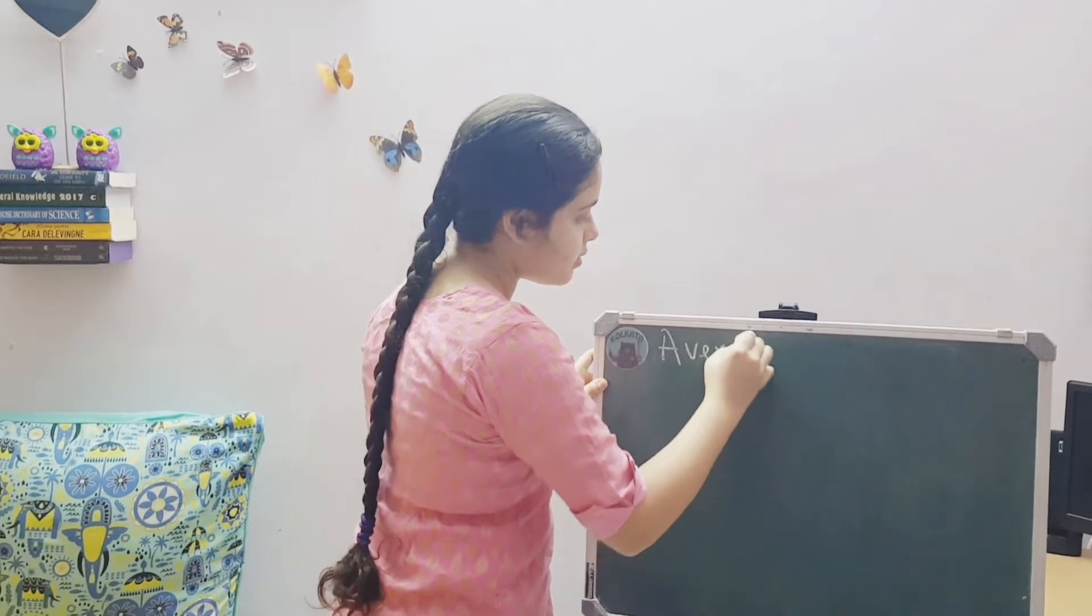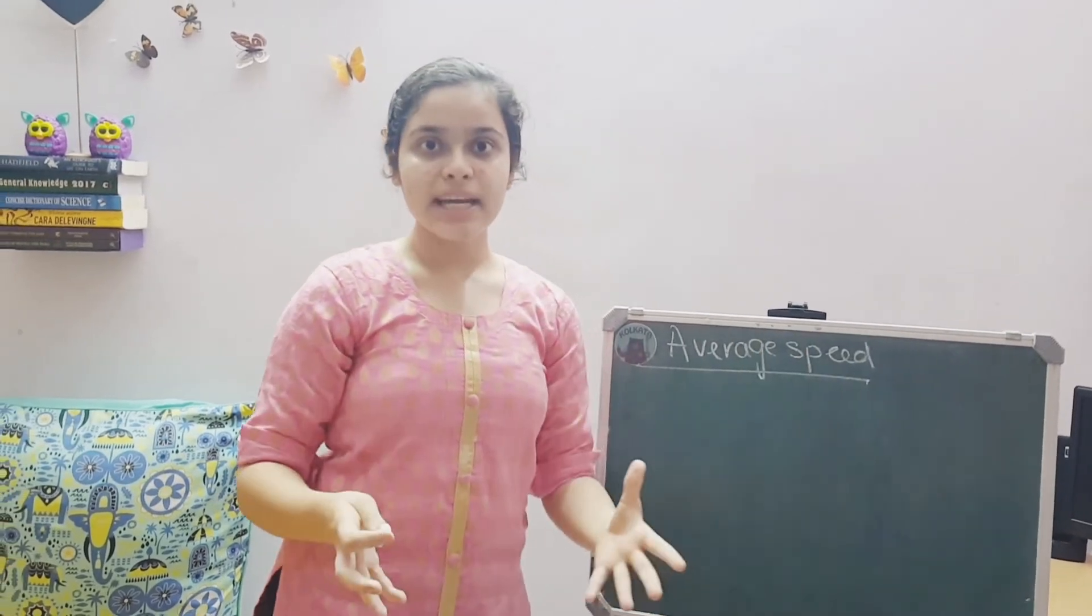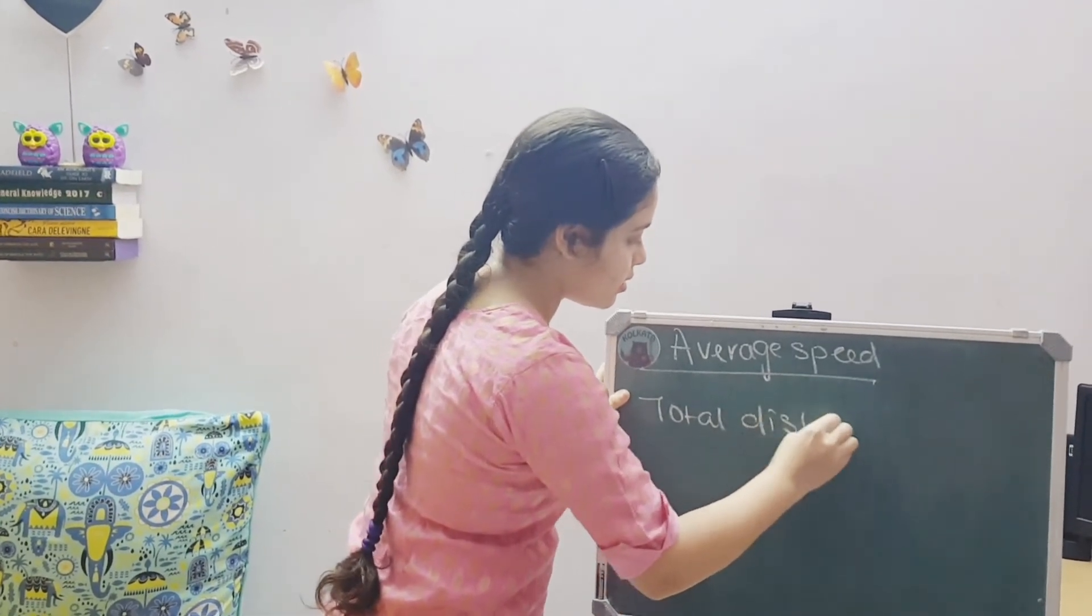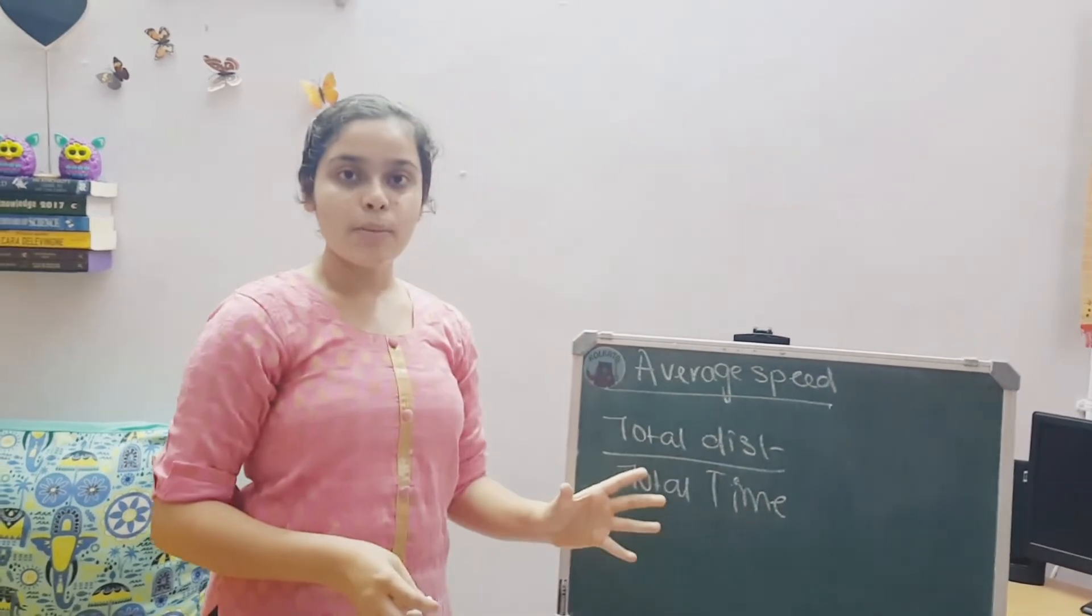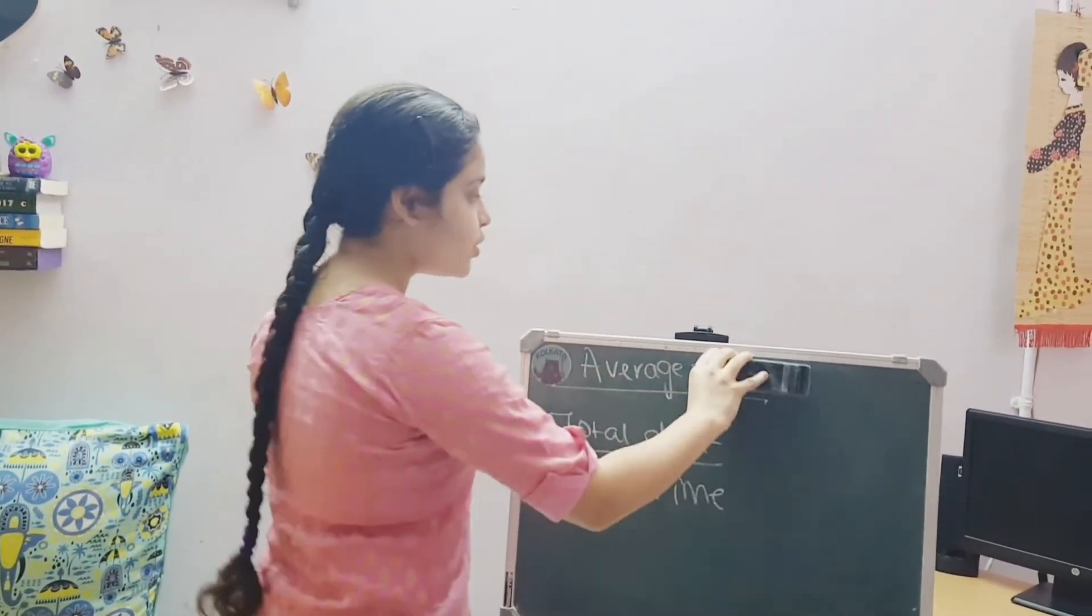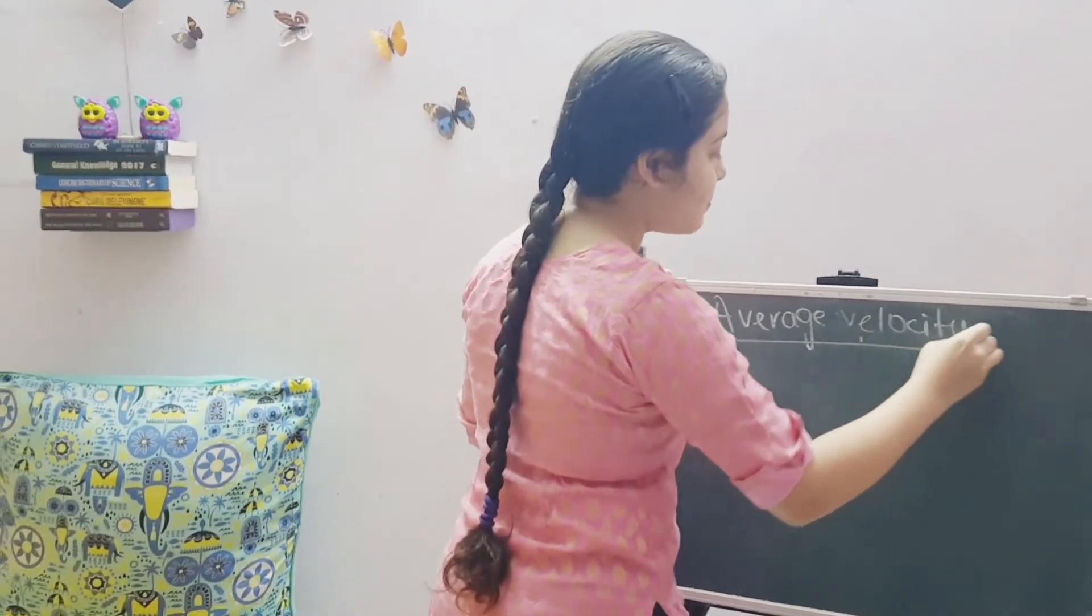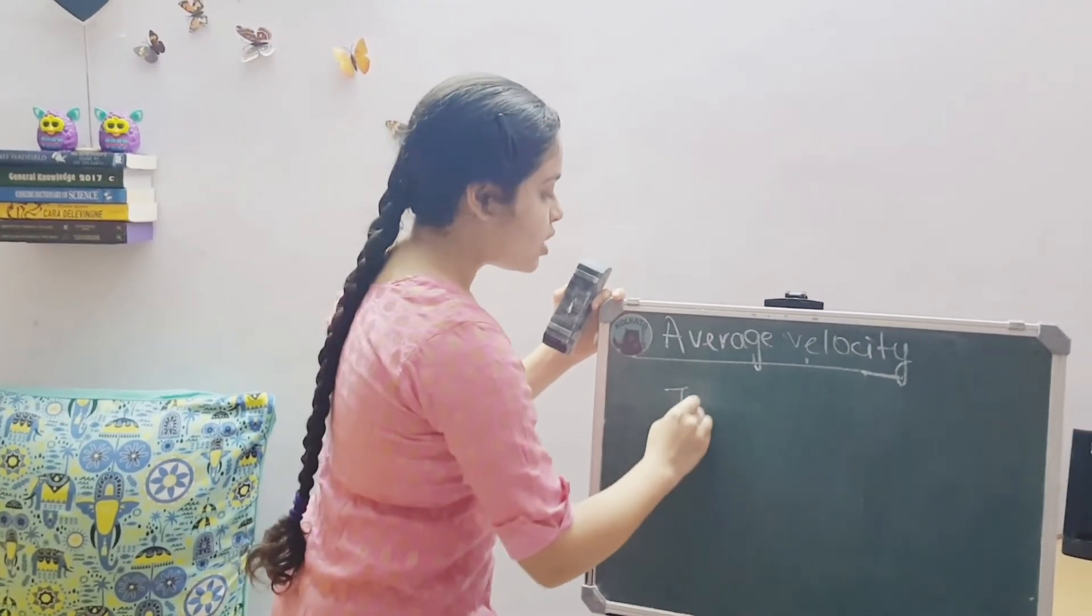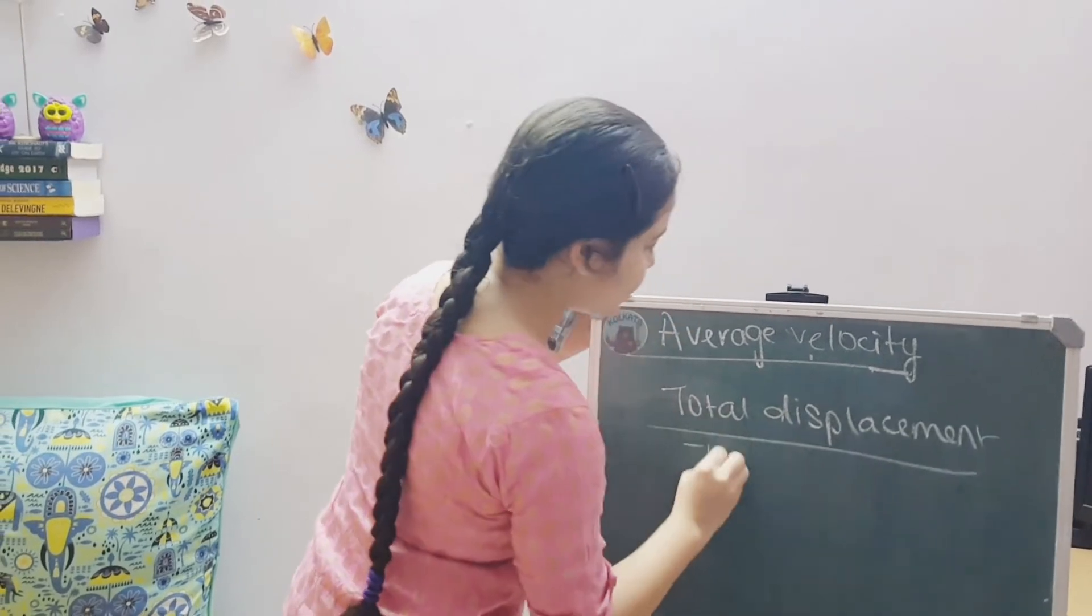Now, let us discuss about average speed. Like I said, speed is associated with distance. So, average speed is nothing but the total distance travelled upon the total time taken. This is the fundamental formula we will be using throughout. Next, let us come to another similar word which is average velocity. If you remember correctly, I also told you that velocity is a vector and it is associated with displacement. So, average velocity, the formula to this is total displacement by the total time taken.